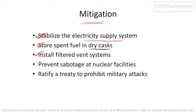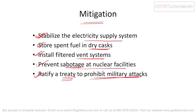Other mitigations include installing filtered vent systems so that any internal leakage can escape safely; preventing sabotage at nuclear facilities; and ratifying treaties to prohibit military attacks on nuclear reactors. If a neighboring or enemy nation attacks a nuclear reactor, it will cause a nuclear disaster, so peace treaties should be signed in advance.